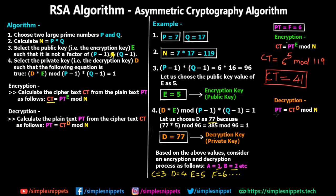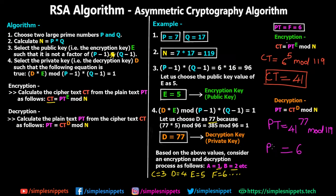For decryption, the formula is PT = CT^D mod N. So PT = 41^77 mod 119. These are very large values but calculating on a scientific calculator gives us 6, which is our original plaintext. We get back the value 6 because the mathematical formulas are designed such that decryption recovers the original plaintext. The algorithm's security comes from P and Q being very large, making it extremely difficult for a hacker to crack.